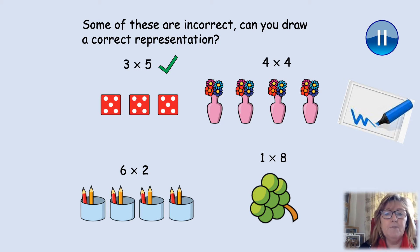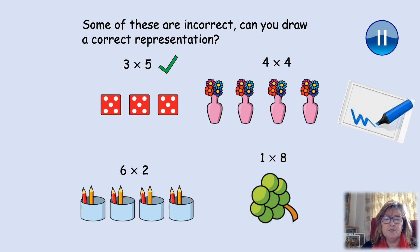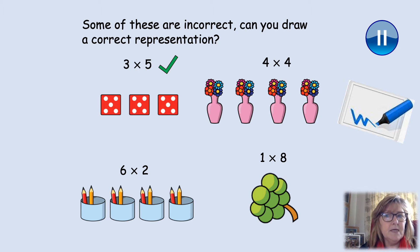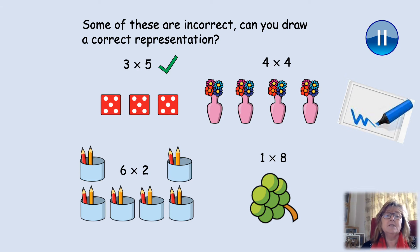Let's look at the pencils in the pot. It says six times two — six lots of two, six groups of two. Have we got six groups of two? How many pencil pots have we got? One, two, three, four. No. We need two more pencil pots. Have we got two pencils in each pot? Yes, we have. Six times two, six lots of two, six groups of two. That's right.